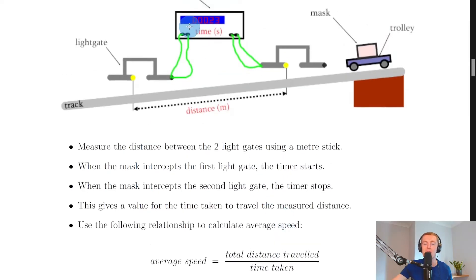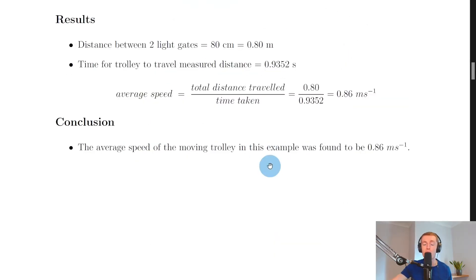Here's some sample results I got from the physics classroom. The distance between the two light gates was 80 centimeters measured with the meter stick, that's the same as 0.8 meters. I did the experiment once to get one time for the trolley to travel the measured distance, which was found to be 0.9352 seconds. I sub that into the equation: average speed equals total distance traveled over time taken, which equals 0.8 over 0.9352.